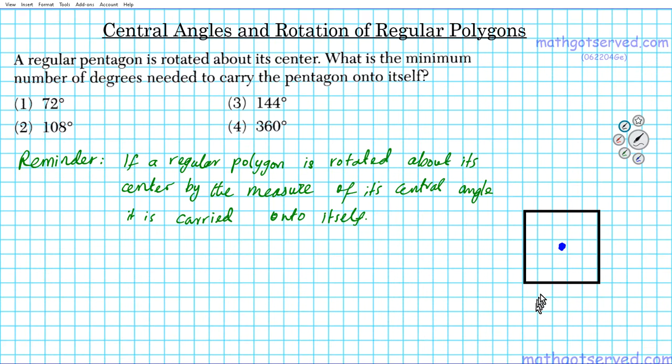Now if we rotate this square 90 degrees about its center, guess what? Rotate it 90 degrees about its center. That's 90 degrees. It carries it onto itself. Basically it maps it back to itself. You have exactly what you started with.